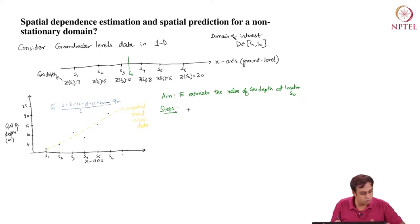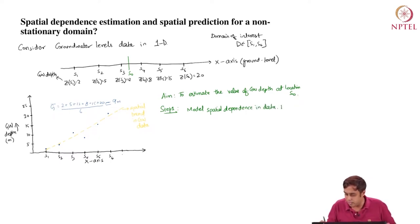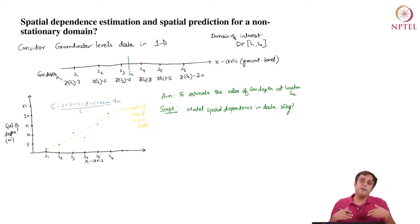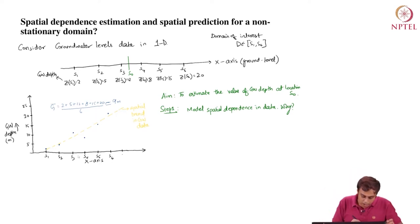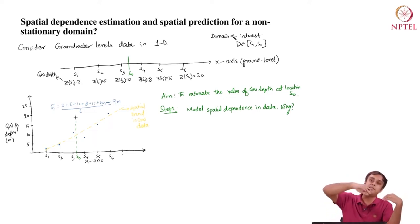What do we do? Step one: we will model spatial dependence in the data using the given sample. If we are able to model spatial dependence, we can figure out what is the strength of dependence around the unsampled point S0. What has been happening before S0 is a rising trend from 2 to 12 — a very quick rise. But as soon as we come to S4, it seems like there is a drop.